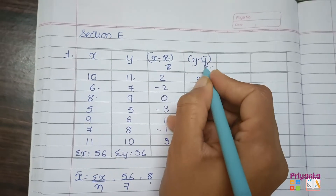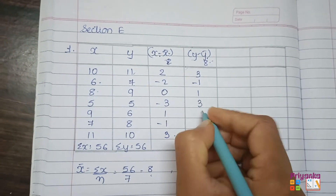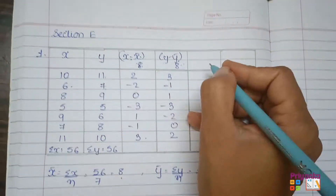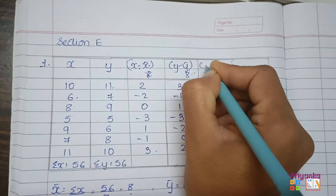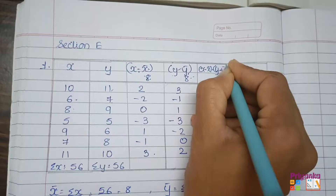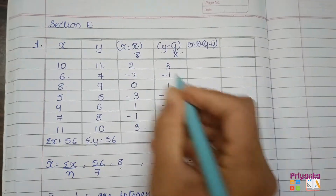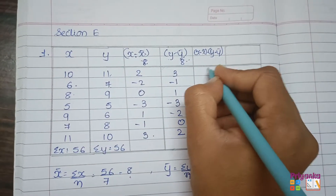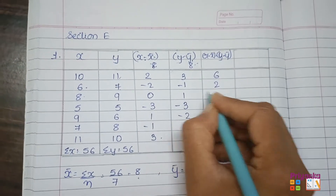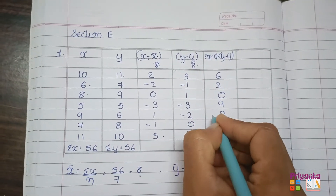Next, we need the column for (x − x̄)(y − ȳ) and its total, which will be called σ(x − x̄)(y − ȳ). Multiplying: 2 × 3 = 6, 2 × 1 = 2 (minus × minus becomes plus, so no negative sign), 0 × 1 = 0, 3 × 3 = 9, 1 × 2 = 2, but this last value has a minus sign so it becomes −2.